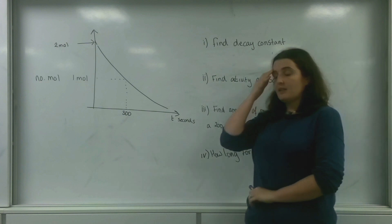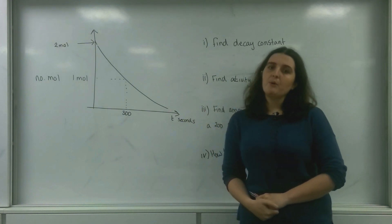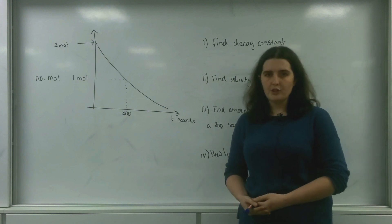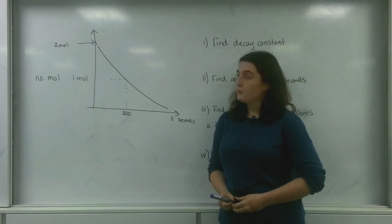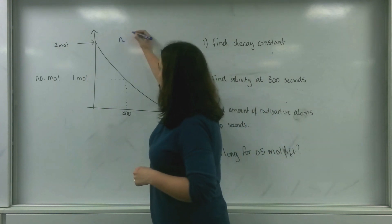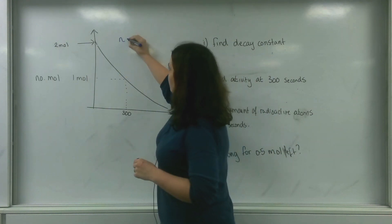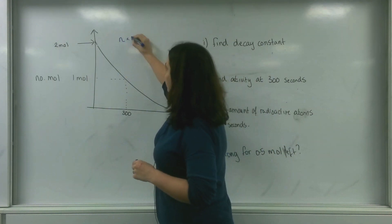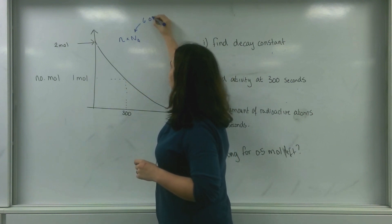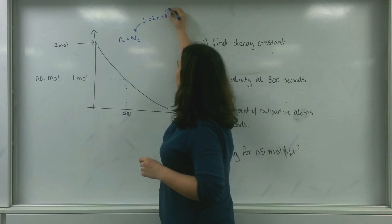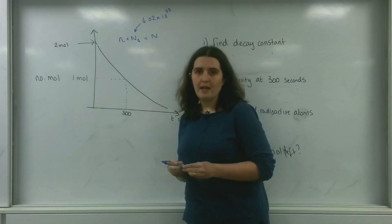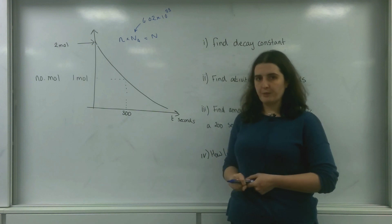I'm using number of moles here, and this is something that can happen — you can be asked mole questions because of number of particles. Just to remind you: the number of moles times Avogadro's constant, which is 6.02 × 10²³, equals the number of molecules. That is something we can use throughout this problem.